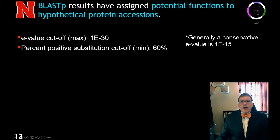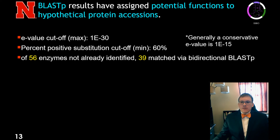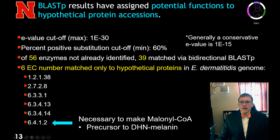For the OpFill results, we checked them against the Exophiala genome using the BLAST-P tool with a conservative expect value cutoff of 1E-30 and a percent positive substitution cutoff of about 60%. Of the 56 enzymes that OpFill suggested to add to fix metabolic gaps, 39 matched to an open reading frame in the Exophiala genome. Notably, six enzyme commission numbers matched only to previously hypothetical proteins, including enzyme 6.4.1.2, which is necessary to make malonyl-CoA, a precursor to DHN melanin synthesis.